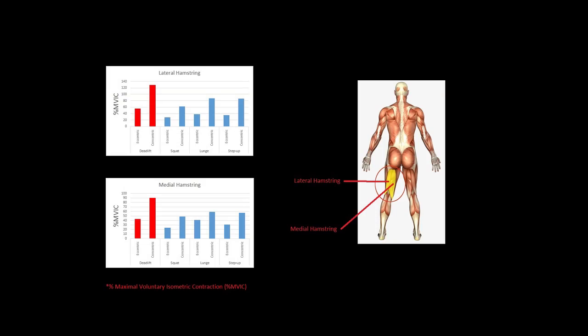Starting with the hamstrings, we can see that both the lateral and medial hamstring muscles are most activated with the deadlifts and least activated with the squats. In particular, for the lateral hamstring, the concentric portion of the deadlift activates the muscle an average of 130% MVIC, whereas it only activates the muscle about 90% MVIC for any of the other movements.